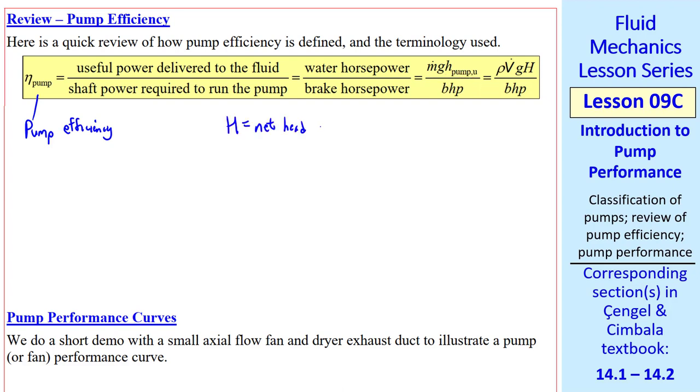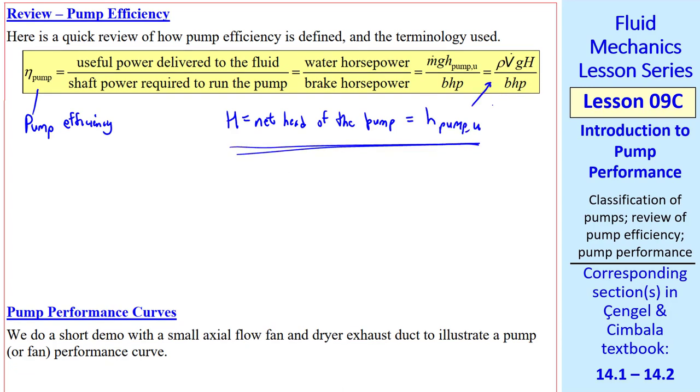In turbomachinery, we often use capital H as the net head of the pump. But it's the same thing as what we're used to calling H-pump, U. So we have this equation for eta pump as well, where we use capital H instead of H-pump, U, and M dot is rho V dot. This is the form we'll use most often. Eta pump is rho V dot G capital H over the brake horsepower, which is the shaft power required to run the pump.